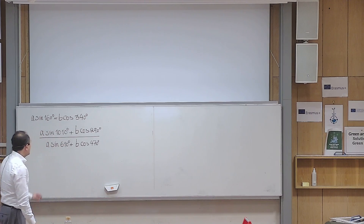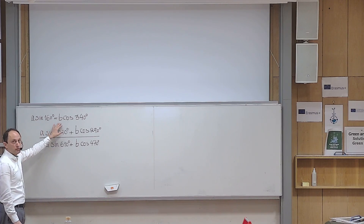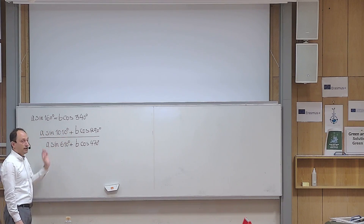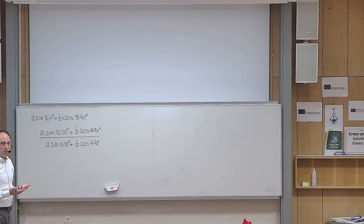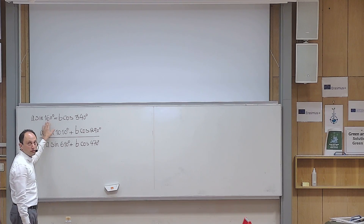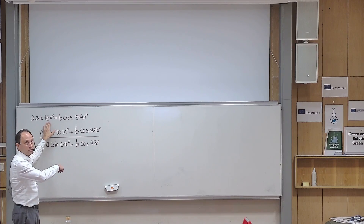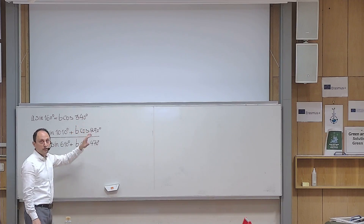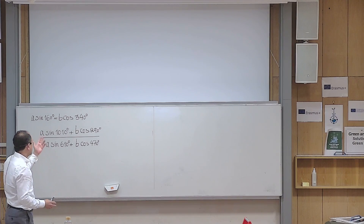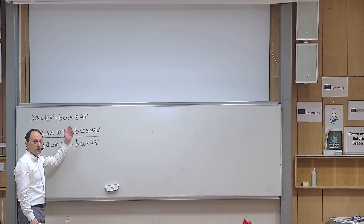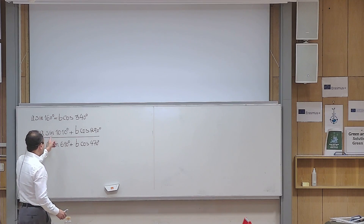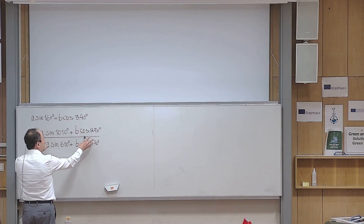So let us solve the problem. We have been given a piece of information, and we want to use it to express this fraction in terms of only A and B. The information is given in terms of the angles 160 degrees, which is in the second quadrant, and 340 degrees, which is in the fourth quadrant. It would be a good idea to rewrite the same expression in terms of angles in the first quadrant — this will help organize our thoughts.